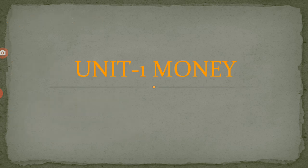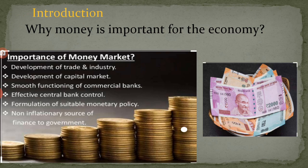Now let us start with the first unit, which is Money. Money is one of the most fundamental of man's inventions and occupies a central position in the modern economic system. In fact, we cannot imagine the working of the modern economy without the use of money, because for the smooth running of the economy, money is essential. We cannot imagine our life without money because to satisfy our needs — whether basic needs or luxurious needs — money is required.